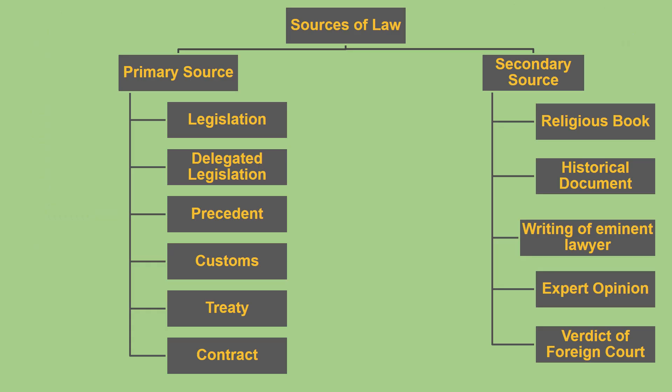We can divide the sources of law into two categories: primary source and secondary source. Primary source is binding law. Secondary source is not binding but used as reference.